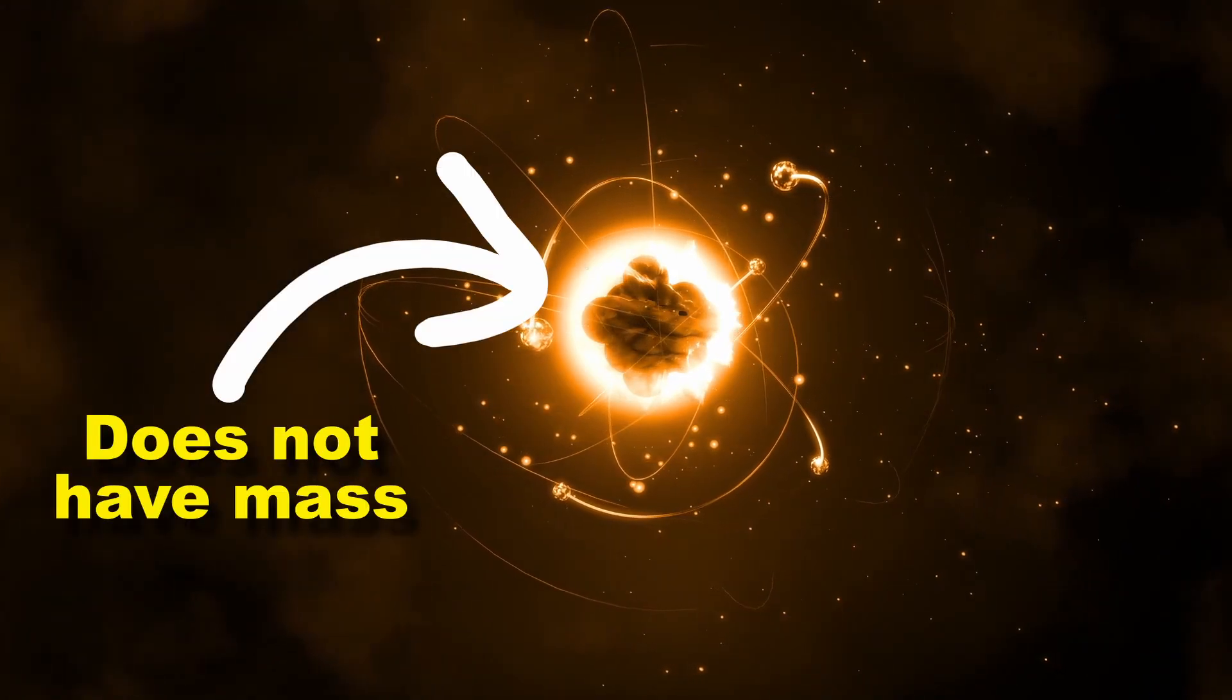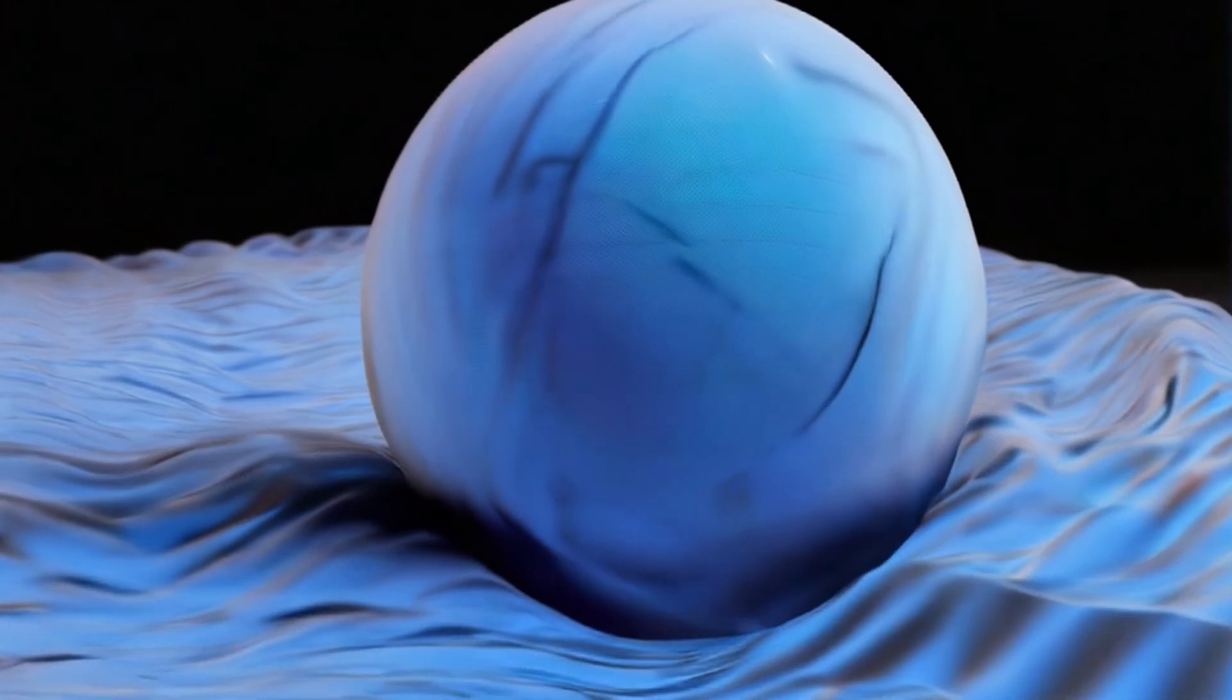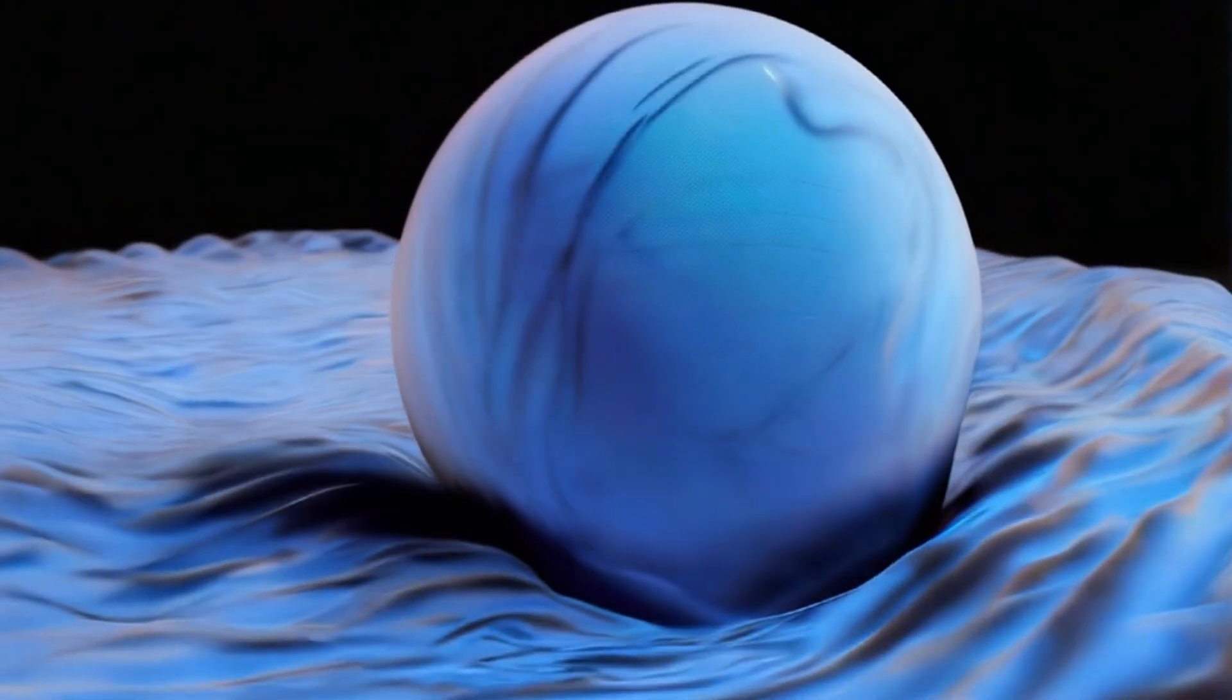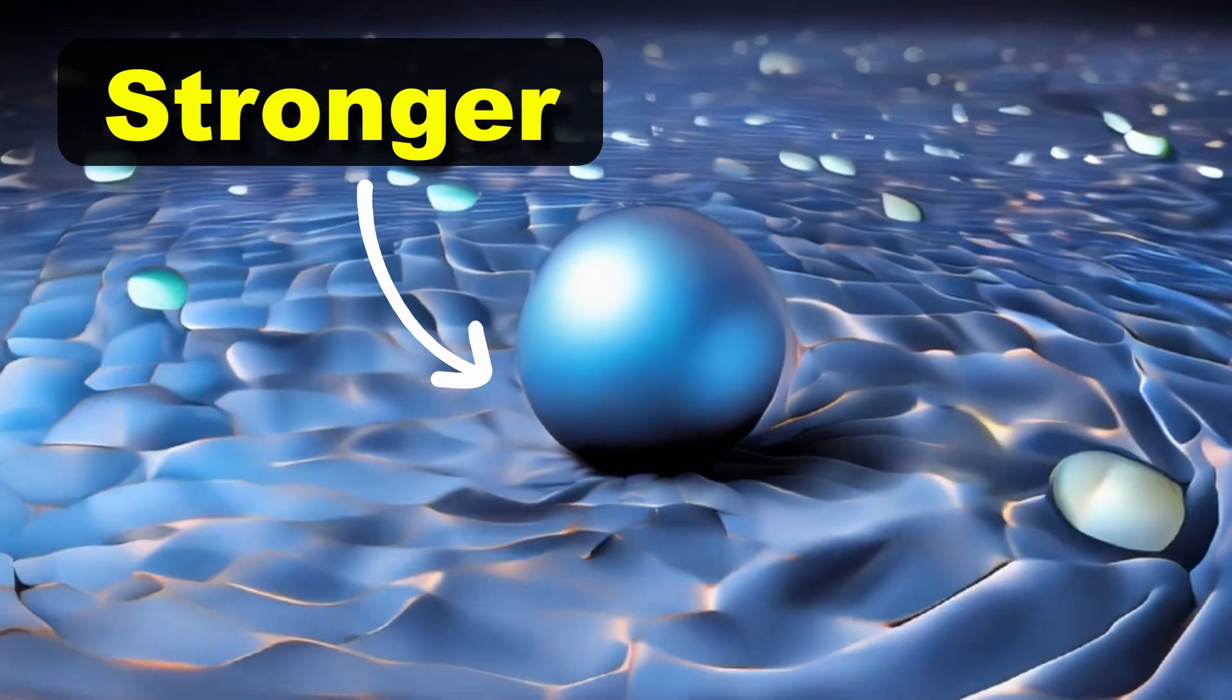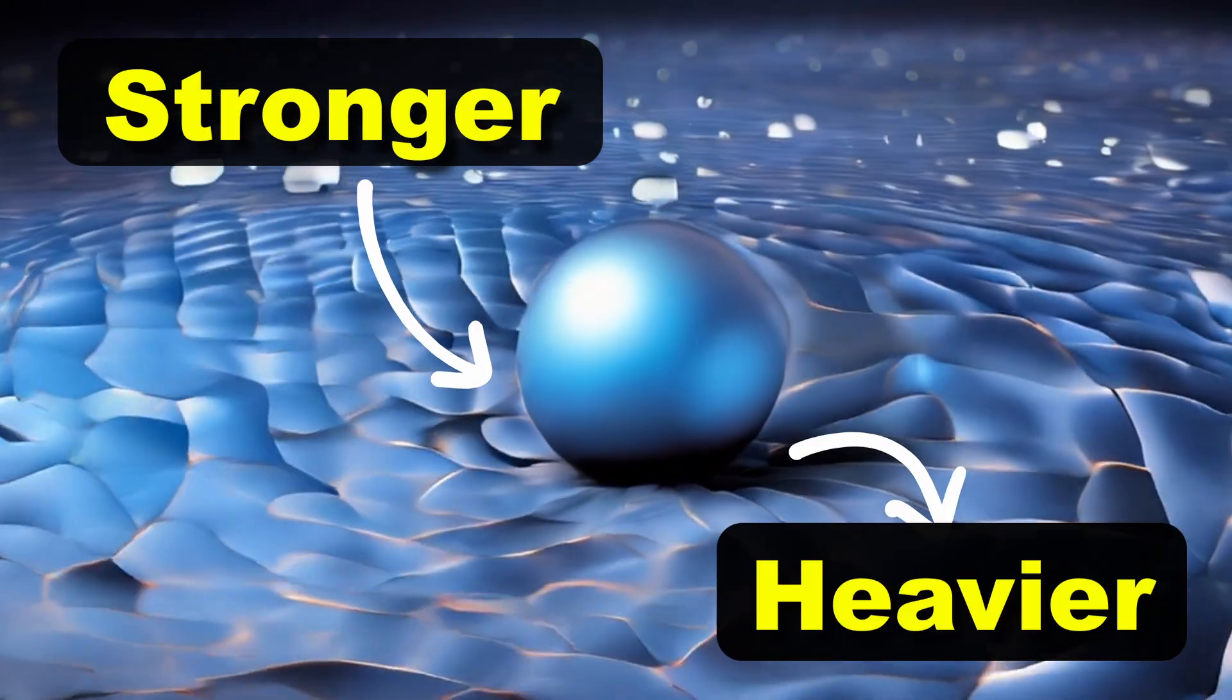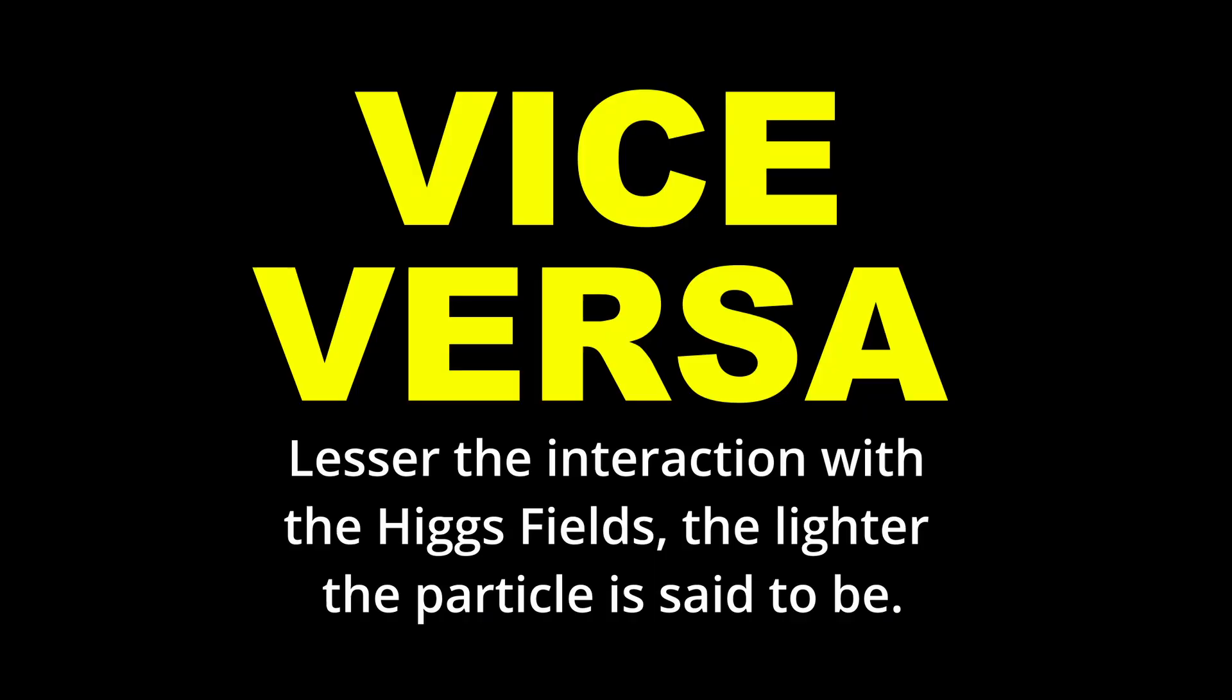Let me further simplify it. It says that the particle itself does not have mass of its own. They get their mass by how they react with this Higgs field. The stronger the particle interacts with the field, the heavier the particle is said to be, and vice versa.